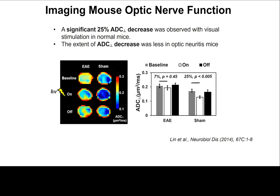How about function? We can use stimulated diffusion imaging to see functional changes. In the control, baseline radial diffusivity is low, but once visual stimulation is turned on, it decreases even further — then returns to normal when stimulation stops. We can see a significant 25 percent decrease that returns to normal once stimulation ceases.